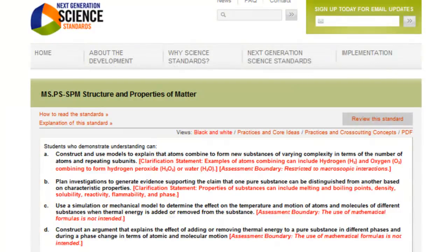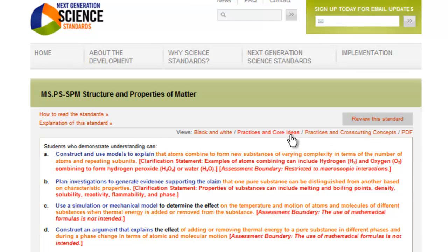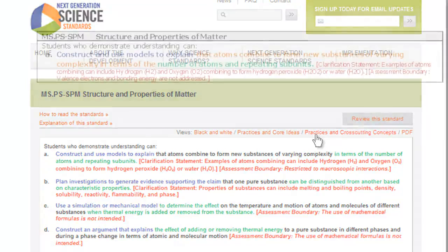On the web, you will be able to choose the coloring option for the performance expectation that is most useful to you: black and white, coloring just the practices and disciplinary core ideas, or coloring just the practices and cross-cutting concepts.